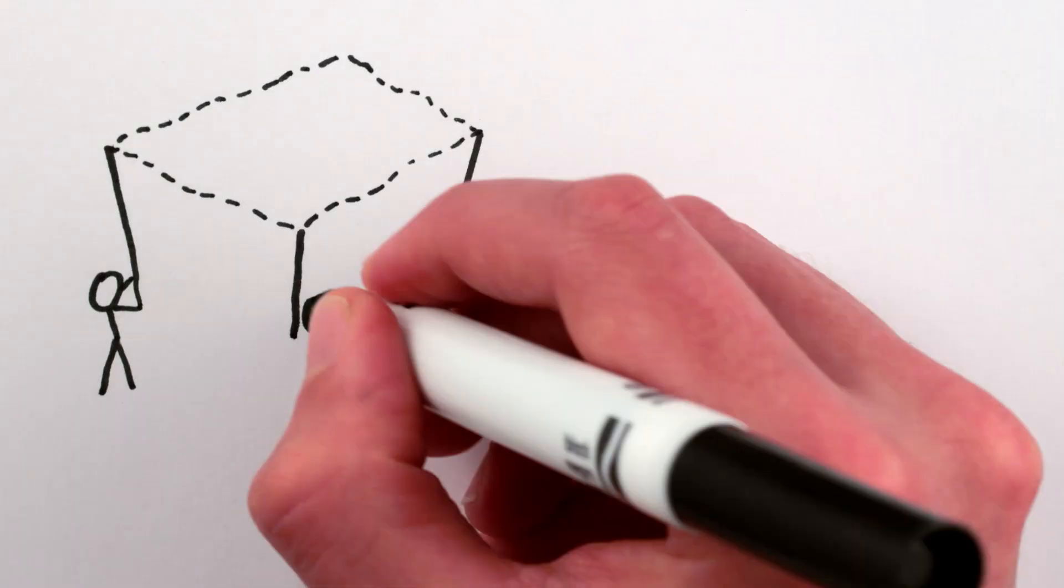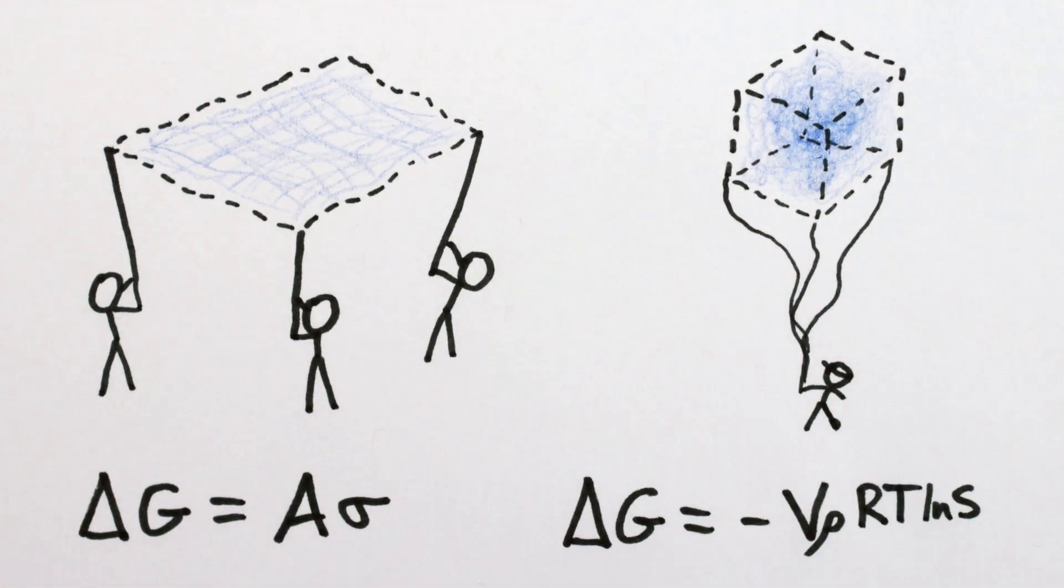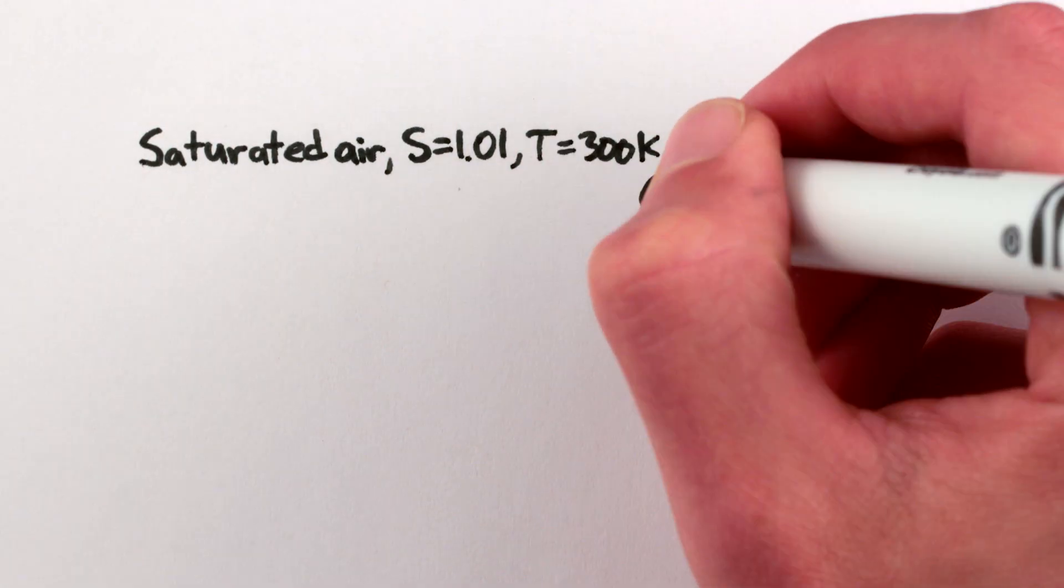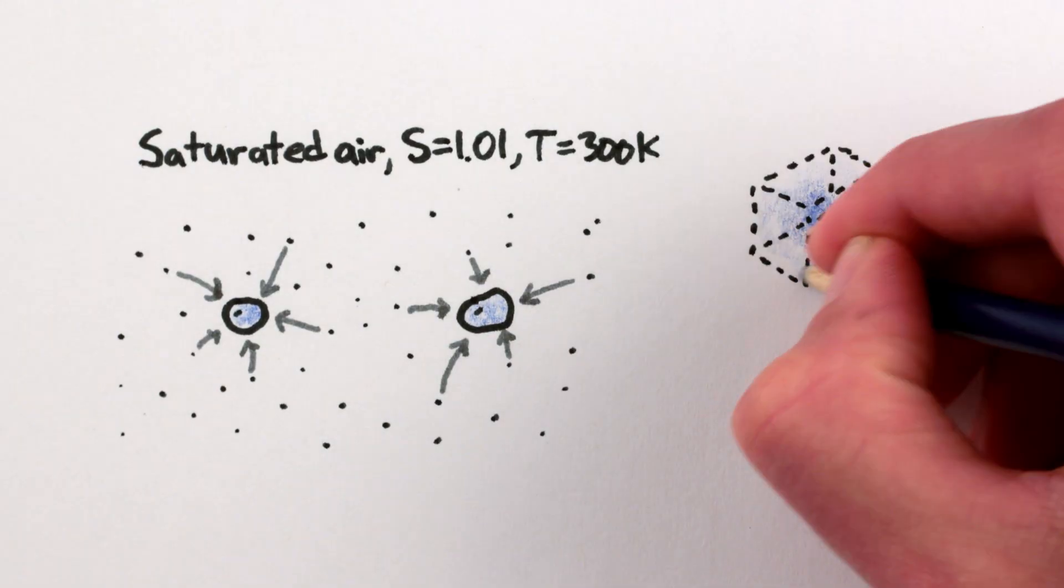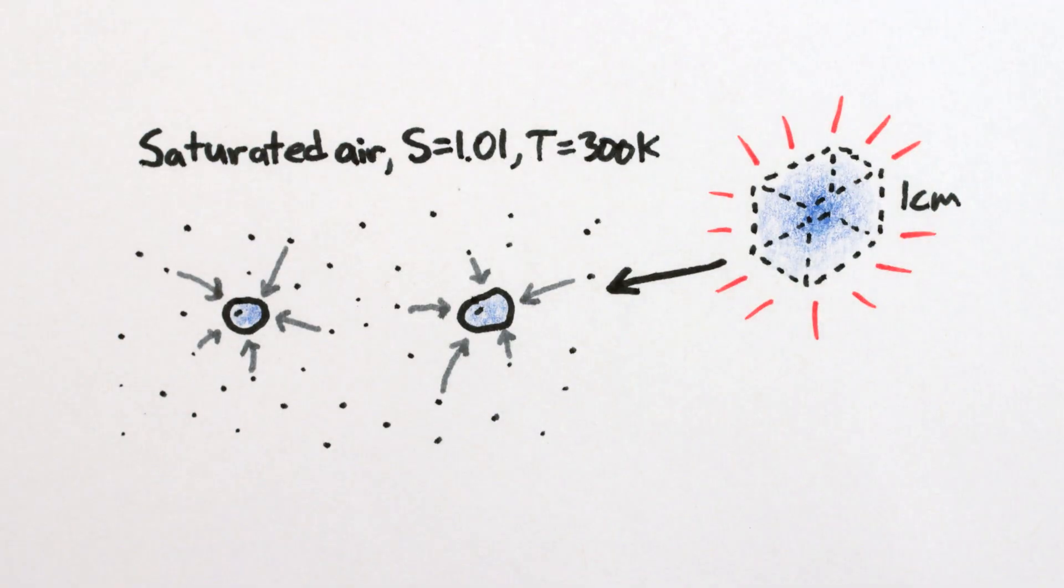The technical way of saying this is that surfaces require more free energy to make than volumes. For example, when you're condensing water in saturated air from a gas to a liquid, every cubic centimeter volume of water you make releases energy just from its change of volume and pressure.